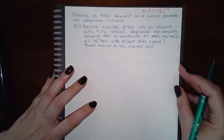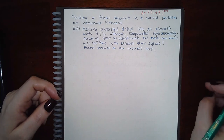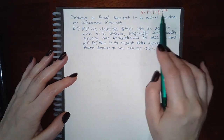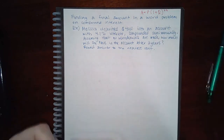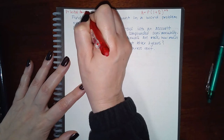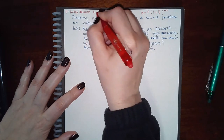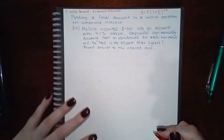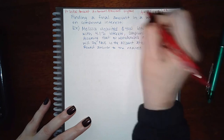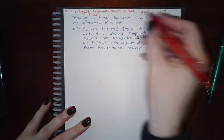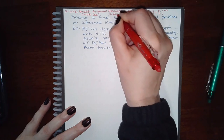This next topic is finding a final amount in a word problem on compound interest. To find the final amount we need to know the formula and what each variable stands for: P is the initial amount, A is the amount afterward — after the time has passed. T is time in years, R is the rate — always make sure it's in decimal form. N is the number of times compounded in a year.